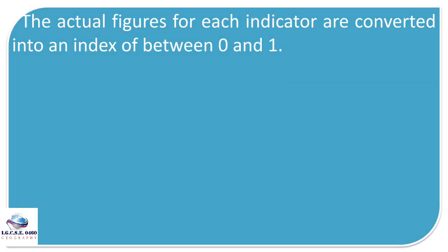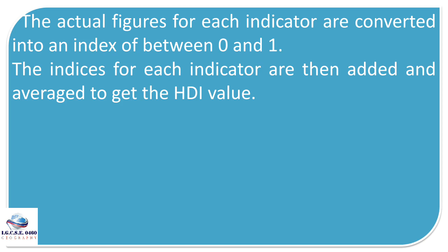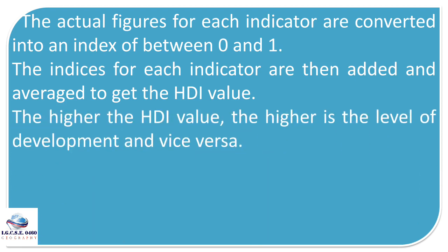So let's look at how HDI works. The actual figures for each indicator are converted into an index of between 0 and 1, and the indices for each indicator are then added and averaged to get the HDI value, which is always less than 1. The higher the HDI value, the higher the level of development, and vice versa.